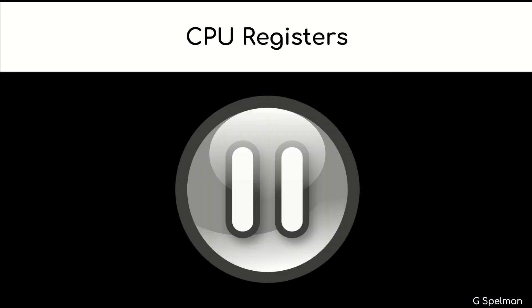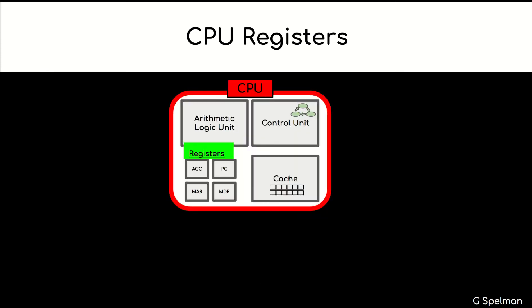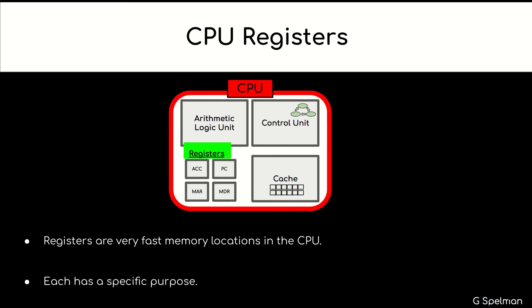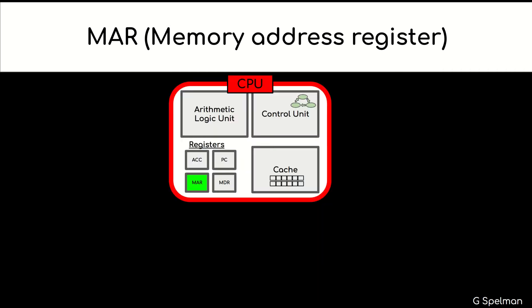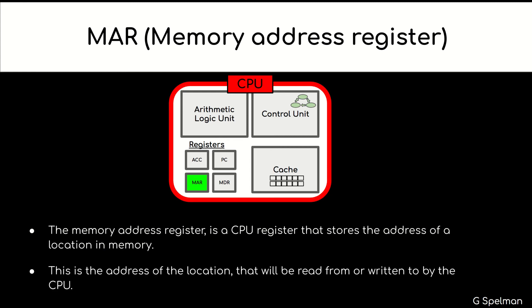CPU registers: registers are very fast memory locations in the CPU. Each has a specific purpose. Memory address register: the memory address register is a CPU register that stores the address of a location in memory. This is the address of the location that will be read from or written to by the CPU.